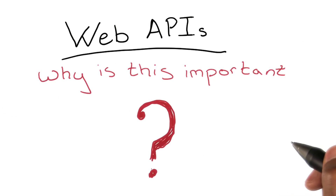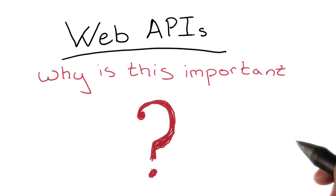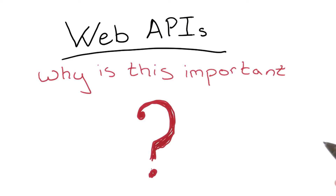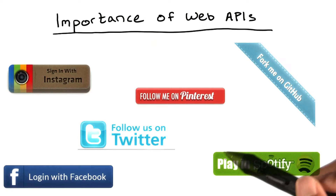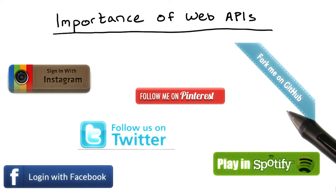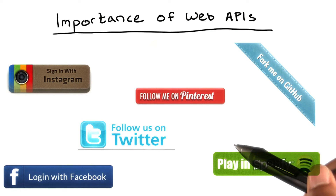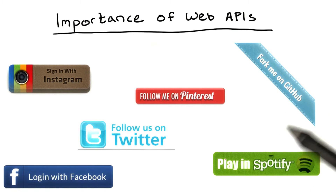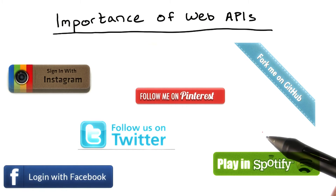But why is all this important? And what do companies gain by allowing their content to be accessible via APIs? By opening up code over the internet, API providers are not only helping other developers who want to use their code, but are also promoting their own business.